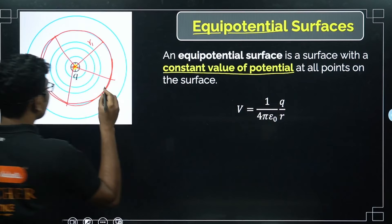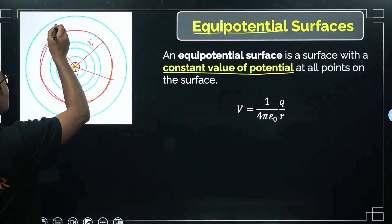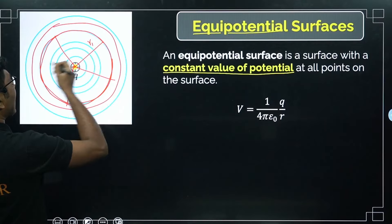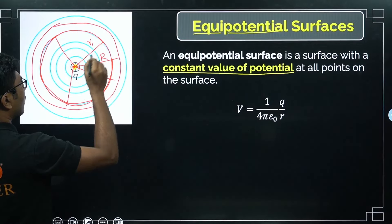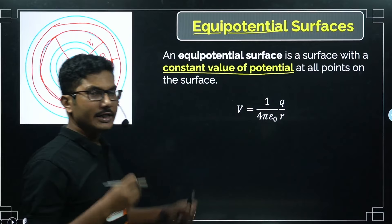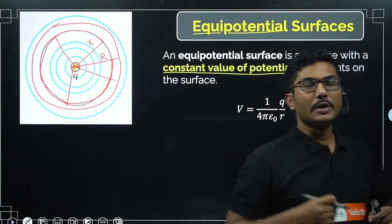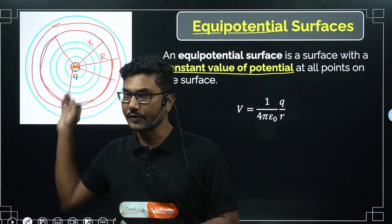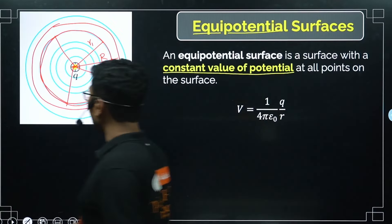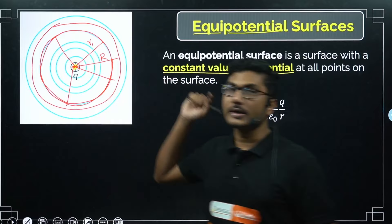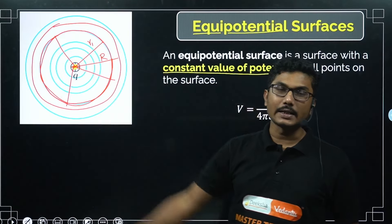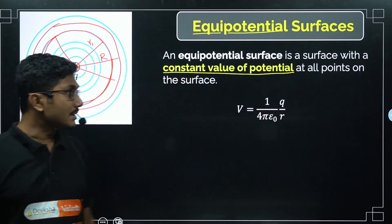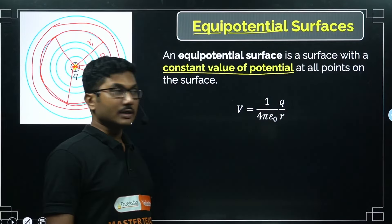You can construct infinite numbers of such spheres at different distances from the point charge — each one is an equipotential surface. For any arbitrary sphere at distance R from the charge, every point on the surface will be at equal potential. So for a point charge, all equipotential surfaces are concentric spheres with the charge at the center.